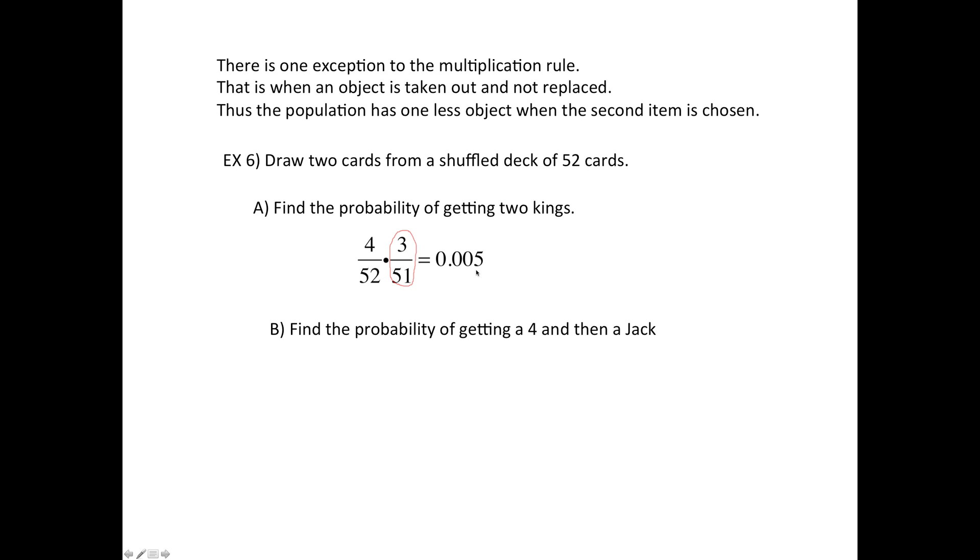All right. What about this? What's the probability of getting a four and then a jack? So when you get a four, there are four out of 52 possibilities for that.